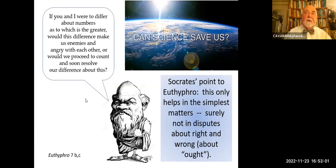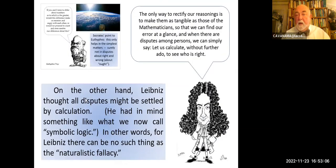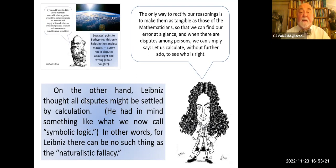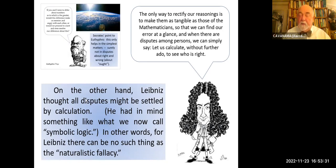So there's a limit to being able to quantify. On the other hand, some centuries later, the philosophy of Leibniz thought that all disputes might be settled by calculation — he had in mind something like what we now call symbolic logic. In other words, for Leibniz there would be no such thing as the naturalistic fallacy. He said: 'The only way to rectify our reasonings is to make them as tangible as those of the mathematicians, so we can find our error at a glance, and when there are disputes among persons, we can simply say, let us calculate, without further ado, and see who's right' — and somehow use numbers to come up with a decision.